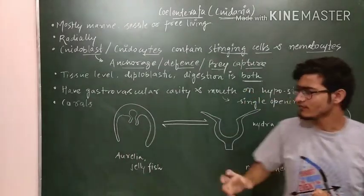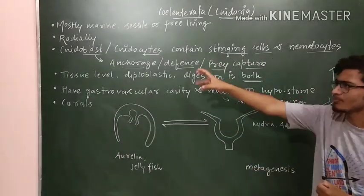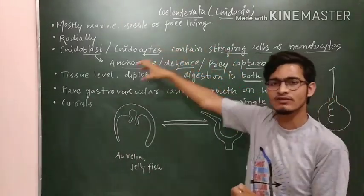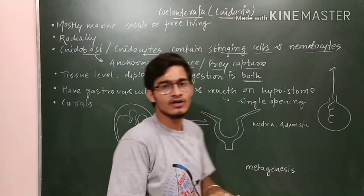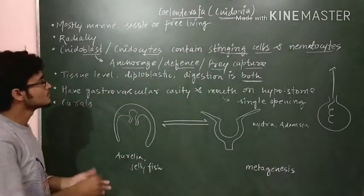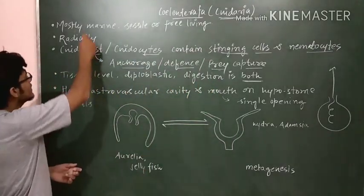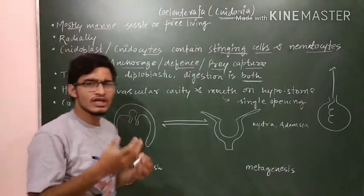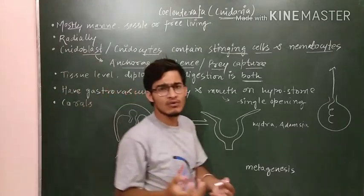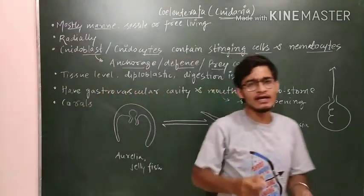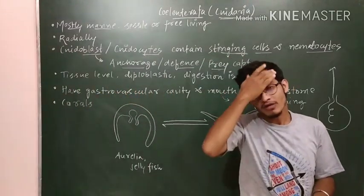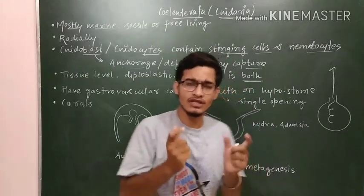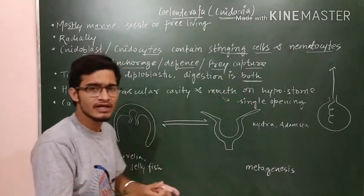These are the functions of nidocytes - the most characteristic feature of Cnidaria. Coelenterata are mostly aquatic, and specifically mostly marine. Some of them are sessile, meaning they cannot move freely, and some of them can be actively moving.